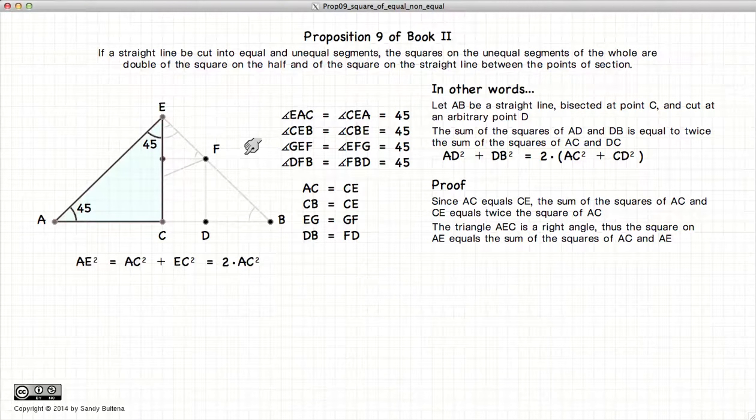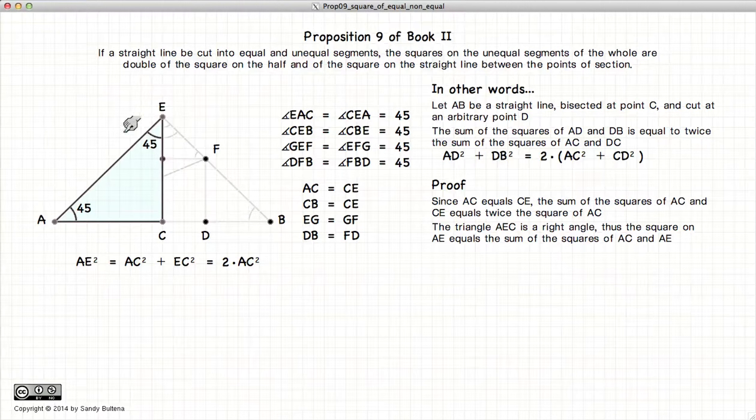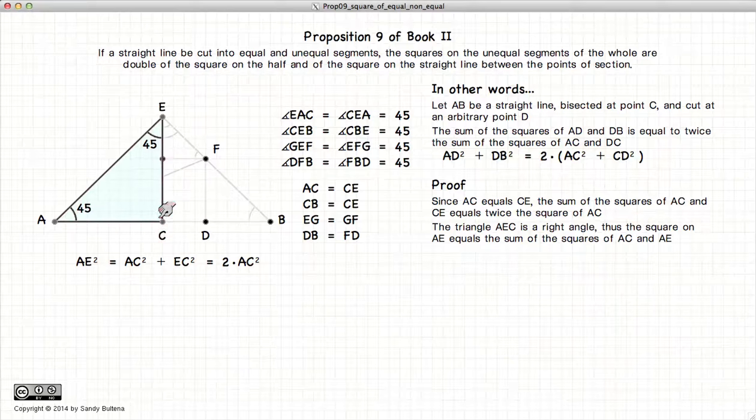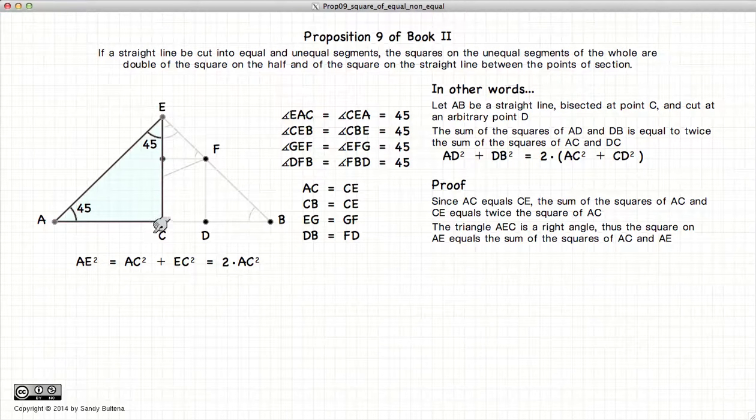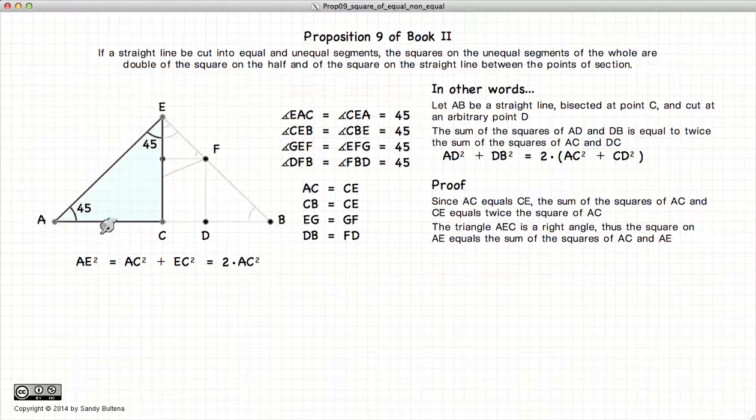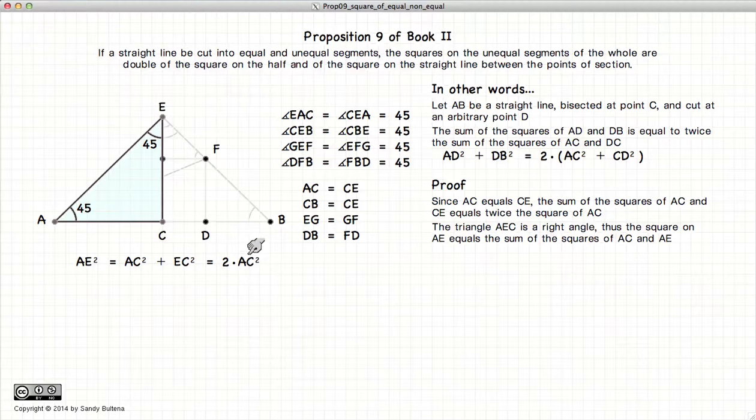So if we go back to our triangle AEC, it is a right angle triangle, so Pythagoras' theorem holds, which means that AE squared is equal to AC squared plus EC squared, but since this line is equal to that line, we have that AE squared is equal to twice AC squared.